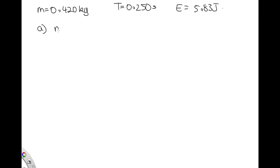Part A asked us what's the maximum velocity. That'll be when all the energy is stored as kinetic energy, so it'll happen when we have 5.83 equals one half mv squared. m is 0.420, and v max squared is what we're trying to find.